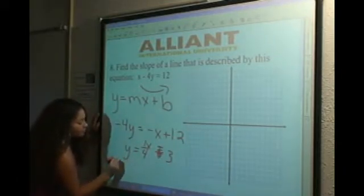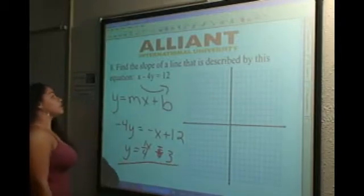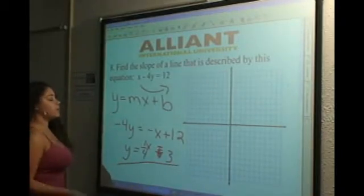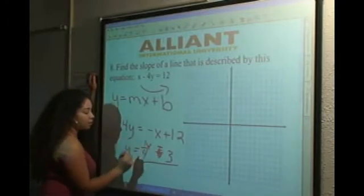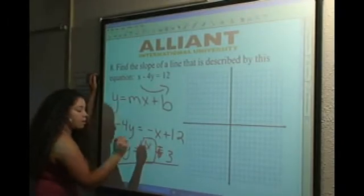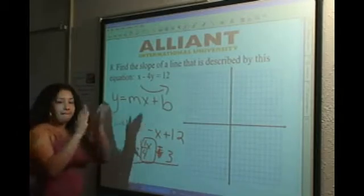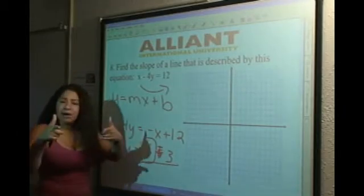So now we're left with this right here. And we're still not done because we have to find our slope. Now what will our slope be if it's in this form? One-fourth. MG-18 out.